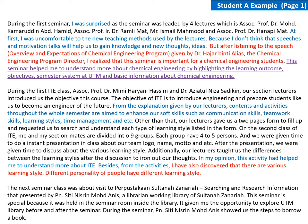This is the example that I have color coded to show you the differences between content, analysis, reflective thinking, evaluation, and also feedback. In this reflection journal, you can clearly see the black color — the black color text is showing the content. In this case, let me read: 'During the first seminar, it was led by four lecturers, which is Professor Doctor, Professor Doctor, and so on.'